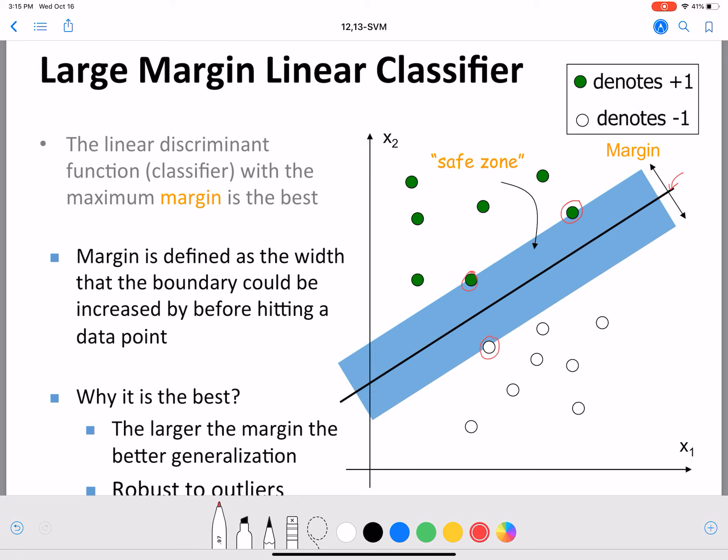Now, why is this the best? Why is having a higher margin or the maximum margin in this case, why is that the best? Think about this: the larger the margin, the better the generalization. You have to generalize to new data points at test time.